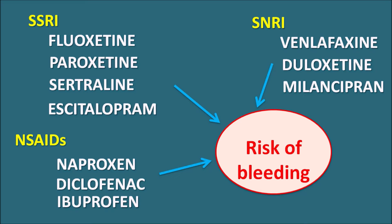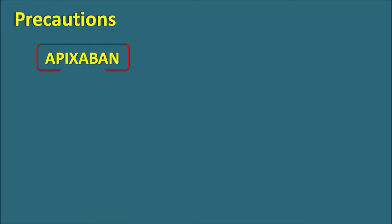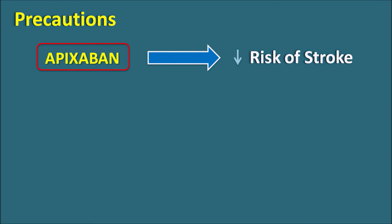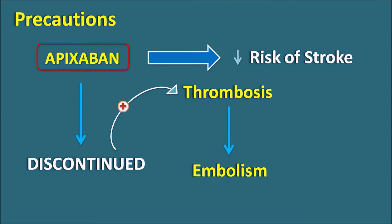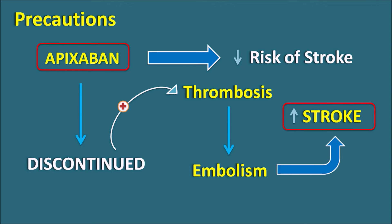This is an important precaution when apixaban is used — either the dose may be adjusted, or an alternative therapy may be initiated to prevent the risk of bleeding. Another important precaution: when apixaban is discontinued without prescribing another anticoagulant, and there is still a risk of stroke, discontinuation may lead to thrombosis, which may lead to embolism and increased risk of stroke. This drug should not be suddenly stopped.